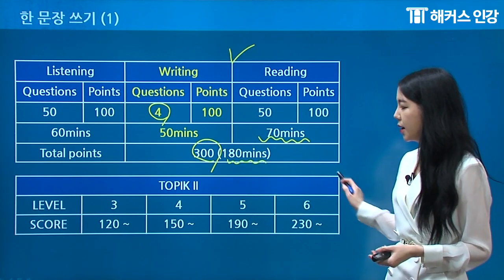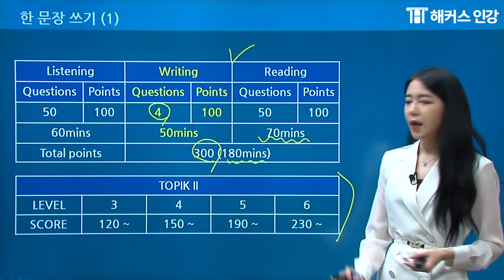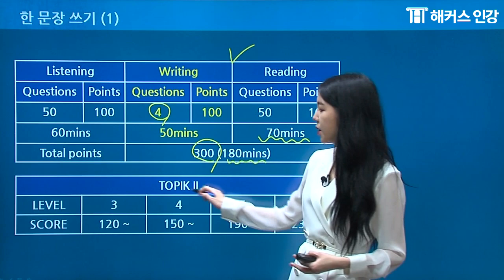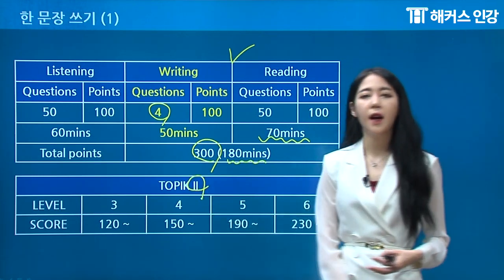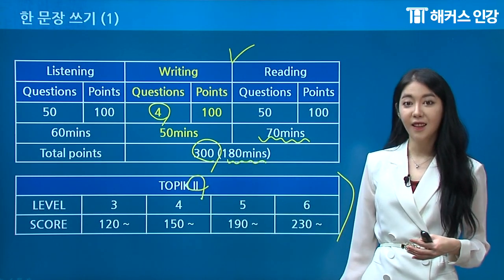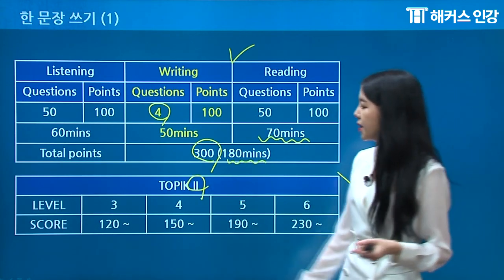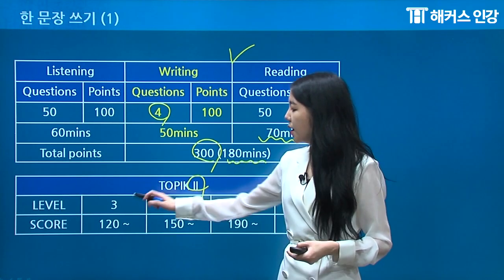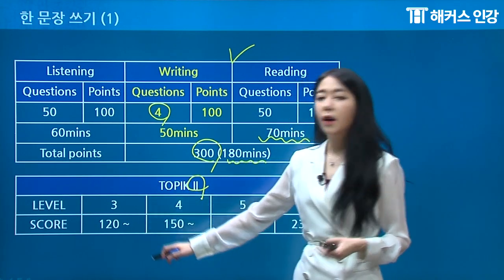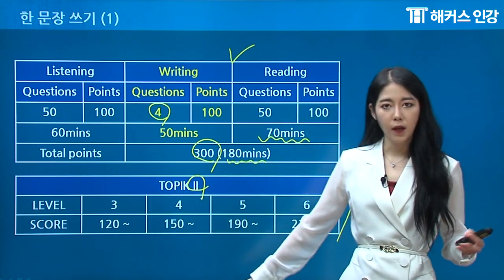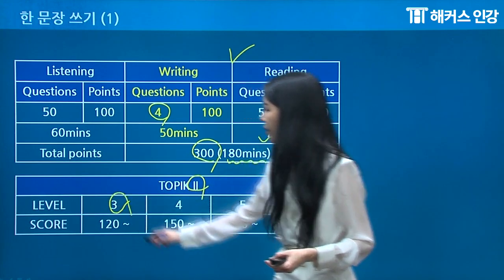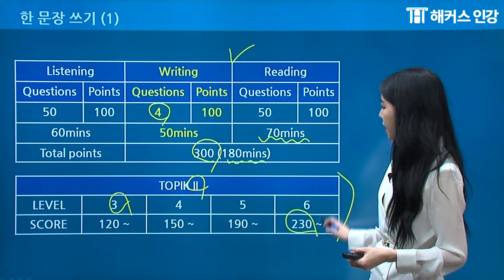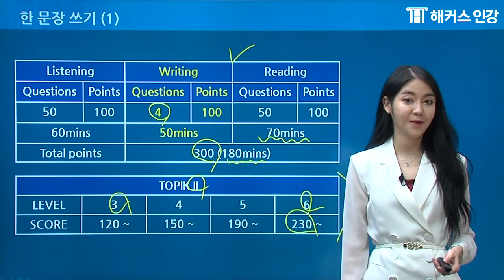The levels are shown here. Since this is Topic 2, it's already an advanced level — it starts from level 3. So if you get over 120, it's going to be level 3. If you have over 230, it's going to be level 6.